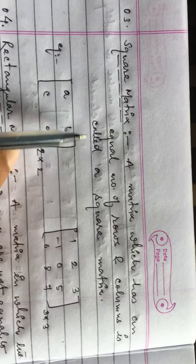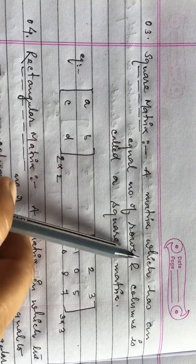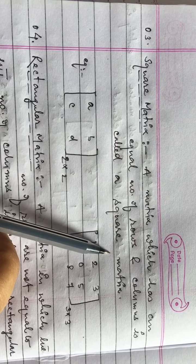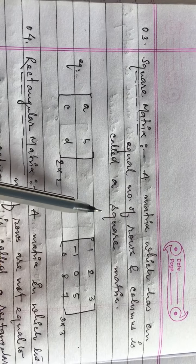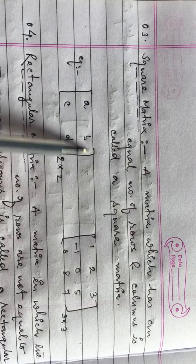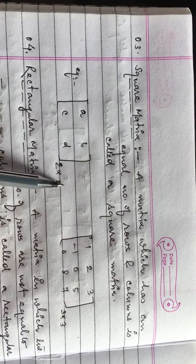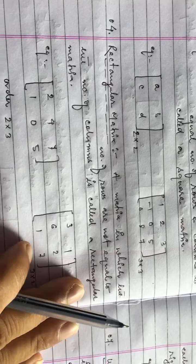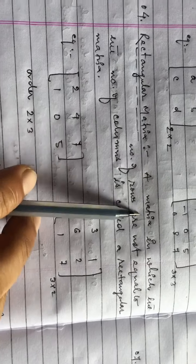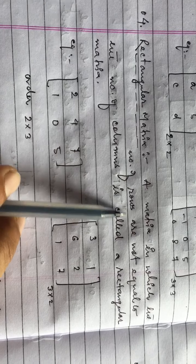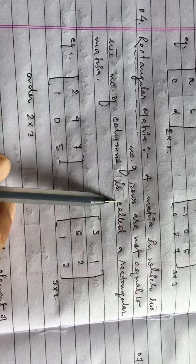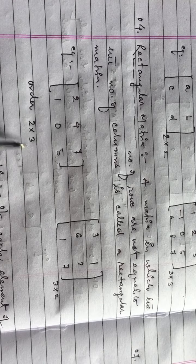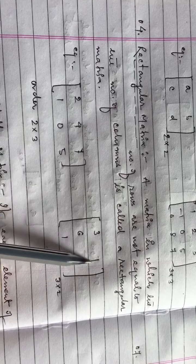Square matrix: A matrix which has an equal number of rows and columns is called a square matrix — for example, two by two or three by three. Rectangular matrix: A matrix in which the number of rows are not equal to the number of columns is called a rectangular matrix — for example, two by three or three by two.